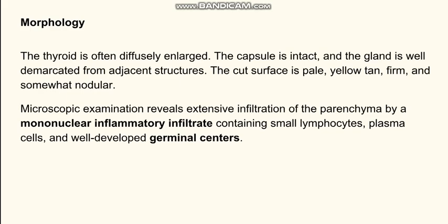Going to the morphology — how the organ will appear. The thyroid will be diffusely enlarged, the capsule will be intact, and the involved gland will be demarcated from the other normal gland. The cut surface is pale, yellow-tan, and firm. In contrast, the normal thyroid is not pale — it has colloid in it and has a brownish tinge; it is not a yellowish or firm organ.